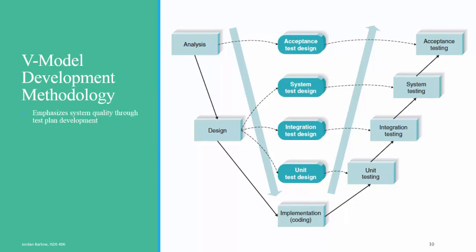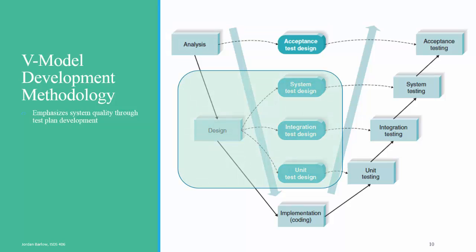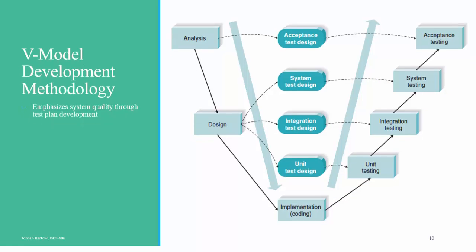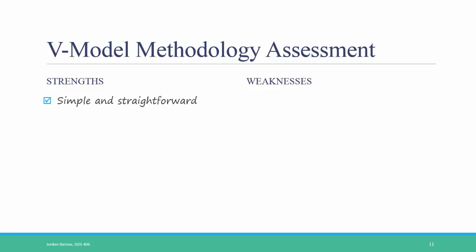Let's take a look at the V-model development methodology. Like the other waterfall methods, you start with planning, then you move to analysis, and then design, and then implementation. However, in the V-model, while you are doing analysis and design, you make careful plans for how you will do testing of your system once you get to the implementation phase. In this way, you are thinking more about the ultimate coding and testing of your system while you are still in the earlier phases of development. So then once you get to implementation, you spend a lot of time focusing on testing based on the tests that you've developed during your analysis and design phases. The strengths of the V-model are that it's simple and straightforward — you're just moving from planning to analysis to design to implementation — but you also have improved quality because you emphasize testing even while you're still in the analysis and design phases.